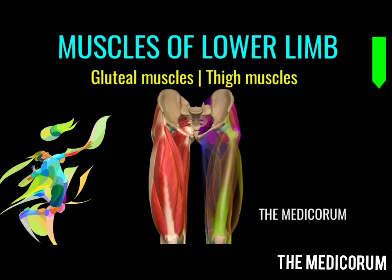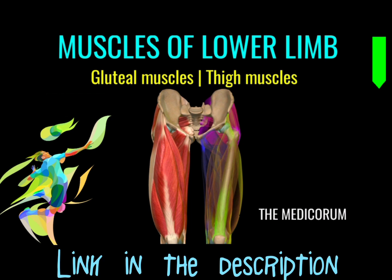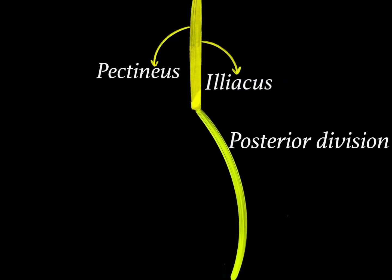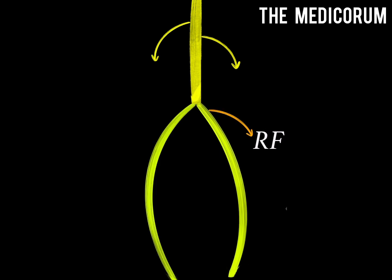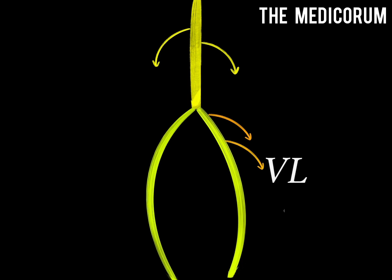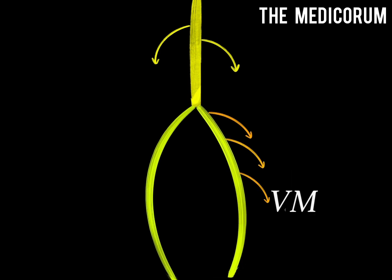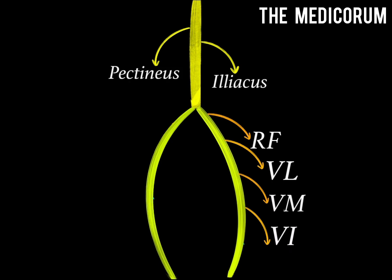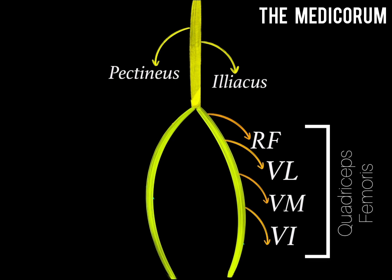Before going into the branches, it's important that you learn all the muscles of the anterior compartment of the thigh. A link is provided in the description box for that video. The posterior division supplies four muscles: rectus femoris, vastus lateralis, vastus medialis, and vastus intermedialis, and indirectly supplies the quadriceps femoris muscle, as all four muscles combine to form it.